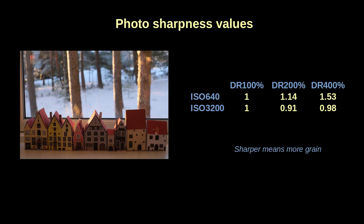And this is most interesting. Here I have the two series that I shot. I used the same f-stop throughout each series. The values were standardized within each series to make the DR 100% sharpness value equal to 1. At ISO 640, the photo is detected as more sharp at increased DR values.